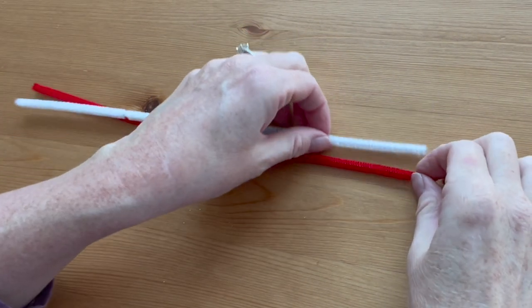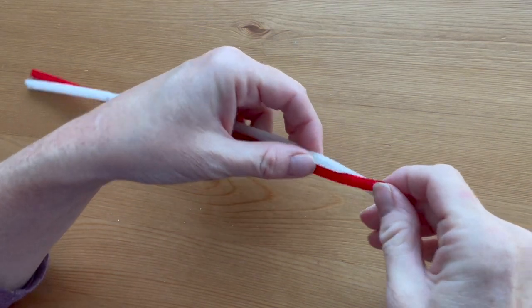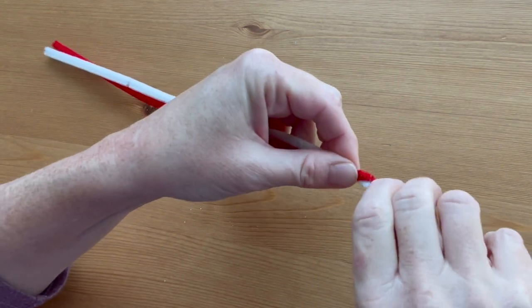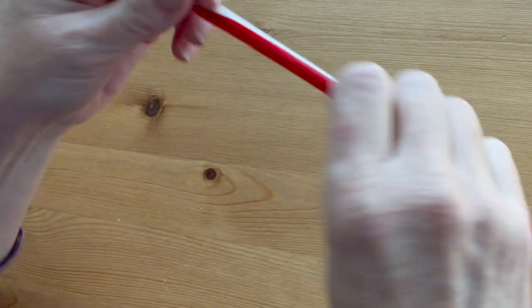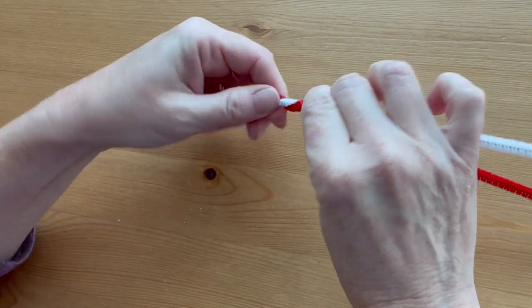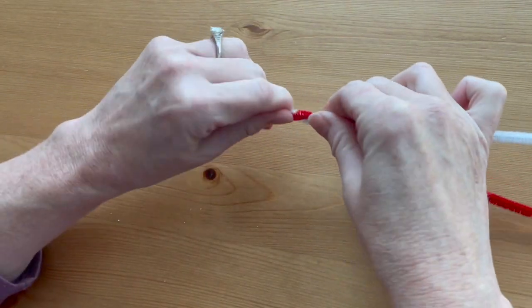For the candy canes, you'll need a red and a white pipe cleaner and then another color, one in this case is green, for later. So twist the red and the white pipe cleaners together from the very top to the very bottom.